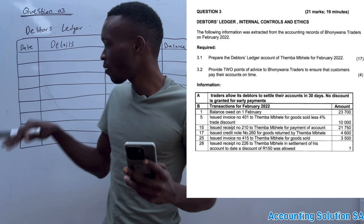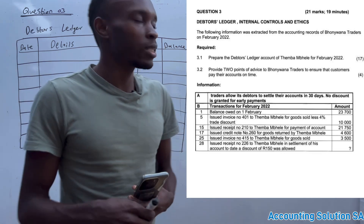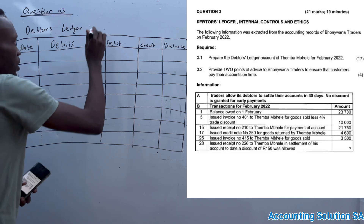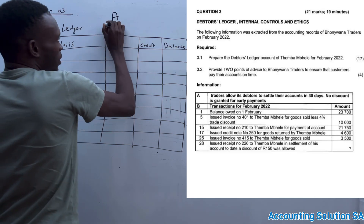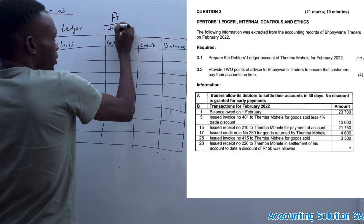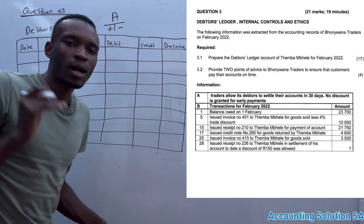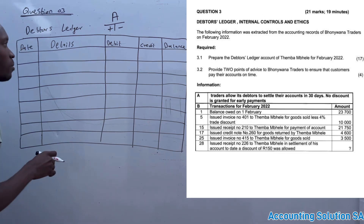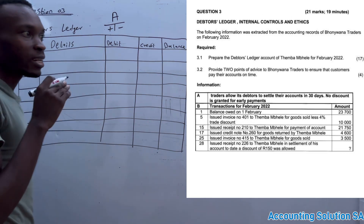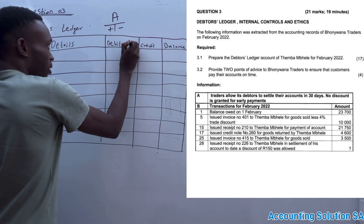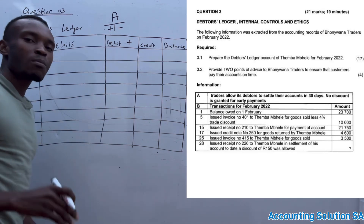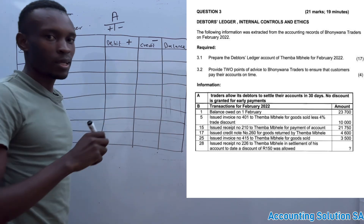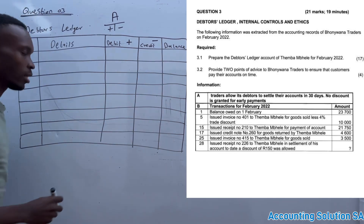What you need to know first is that the debtors ledger account is an asset, which means that assets are always increased on the debit side and decreased on the credit side. We are dealing with a customer that is purchasing goods on credit, which means that whenever the customer increases their debt, the debit side is going to increase.